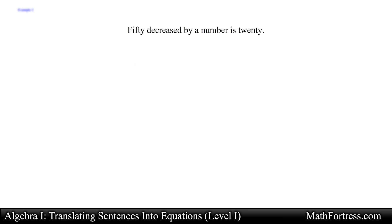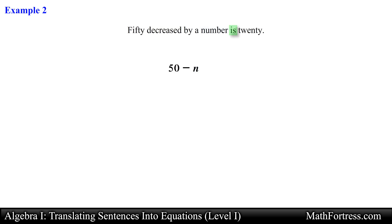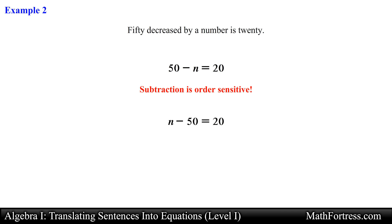Let's try another example: '50 decreased by a number is 20.' We see the key word 'decrease' so we are dealing with subtraction between 50 and a number, written as 50 minus n. We also see the key word 'is,' so we write an equal sign followed by 20. Remember, unlike addition, subtraction is order sensitive — n minus 50 equals 20 is totally different and wrong for this example. The correct answer is 50 minus n equals 20.